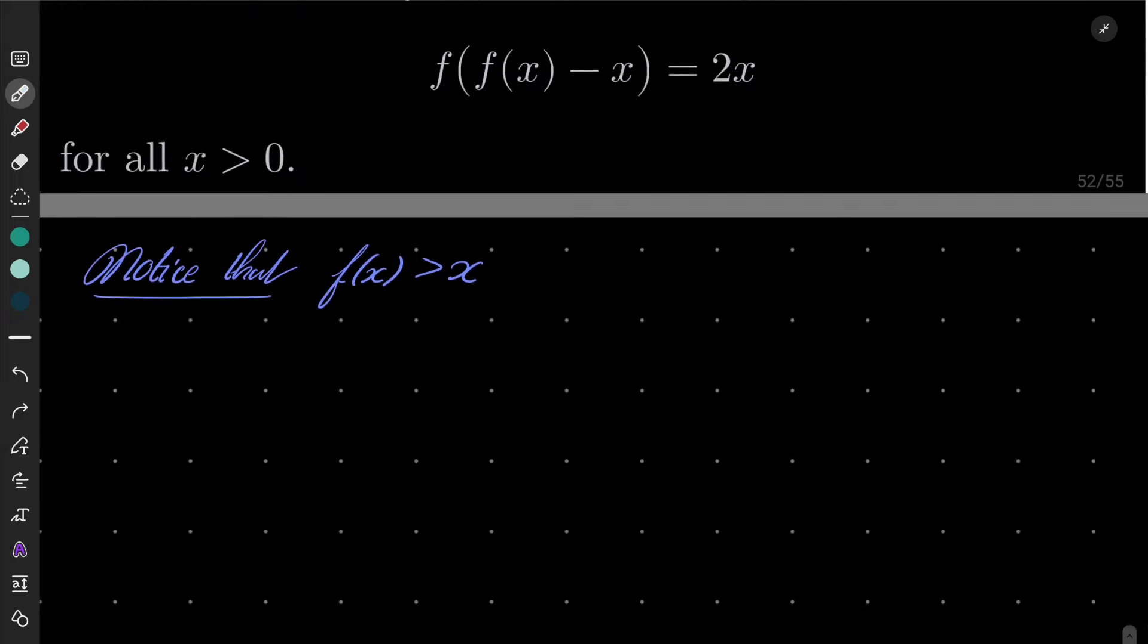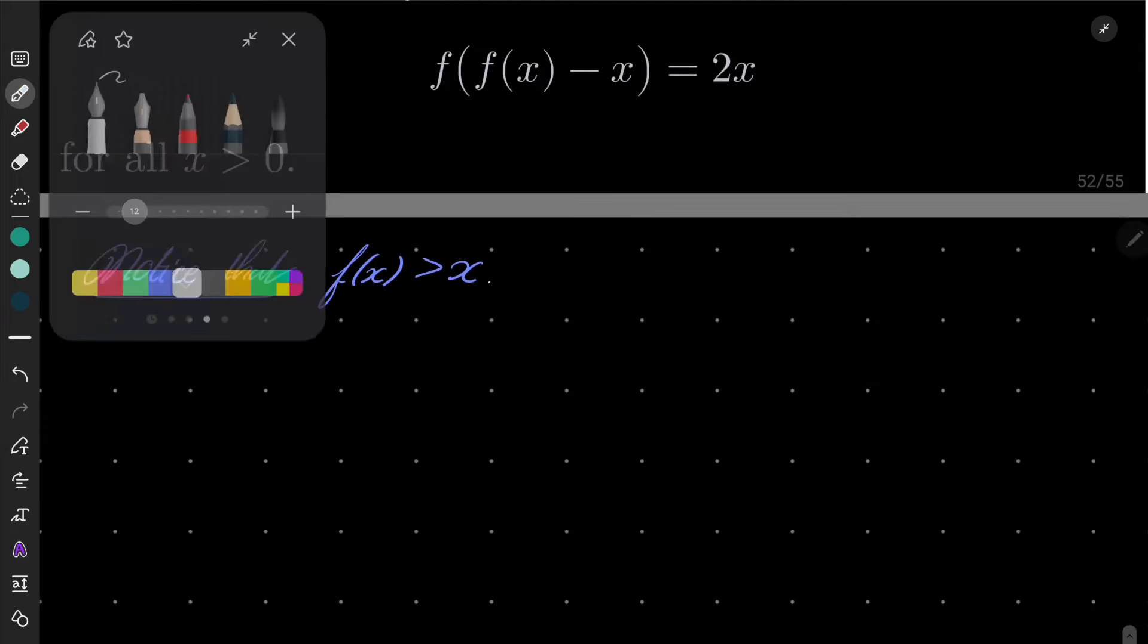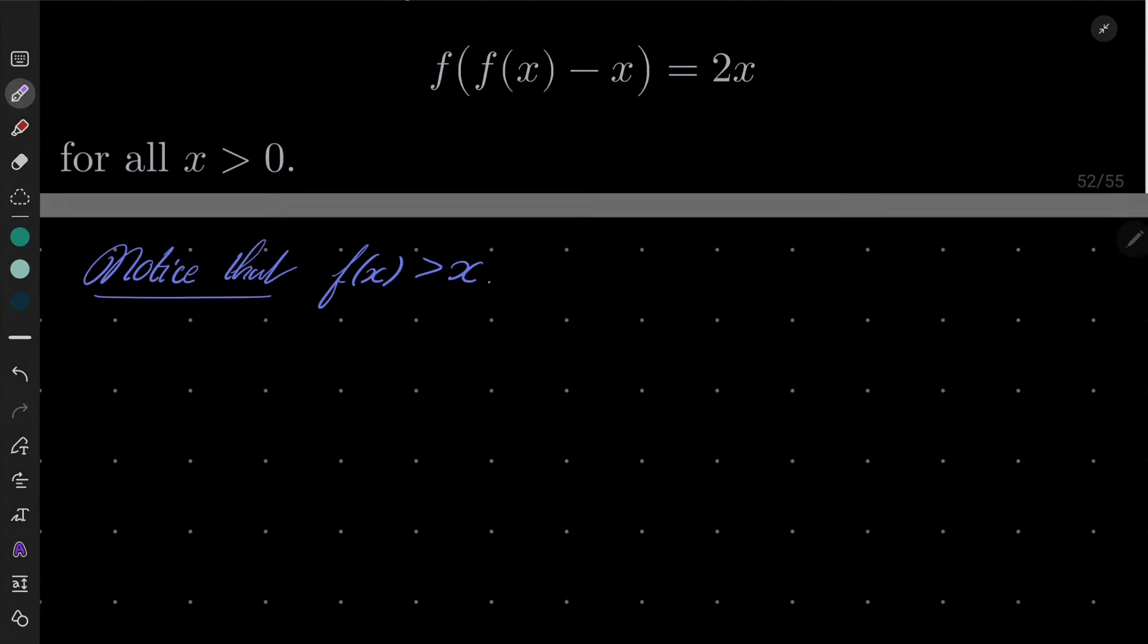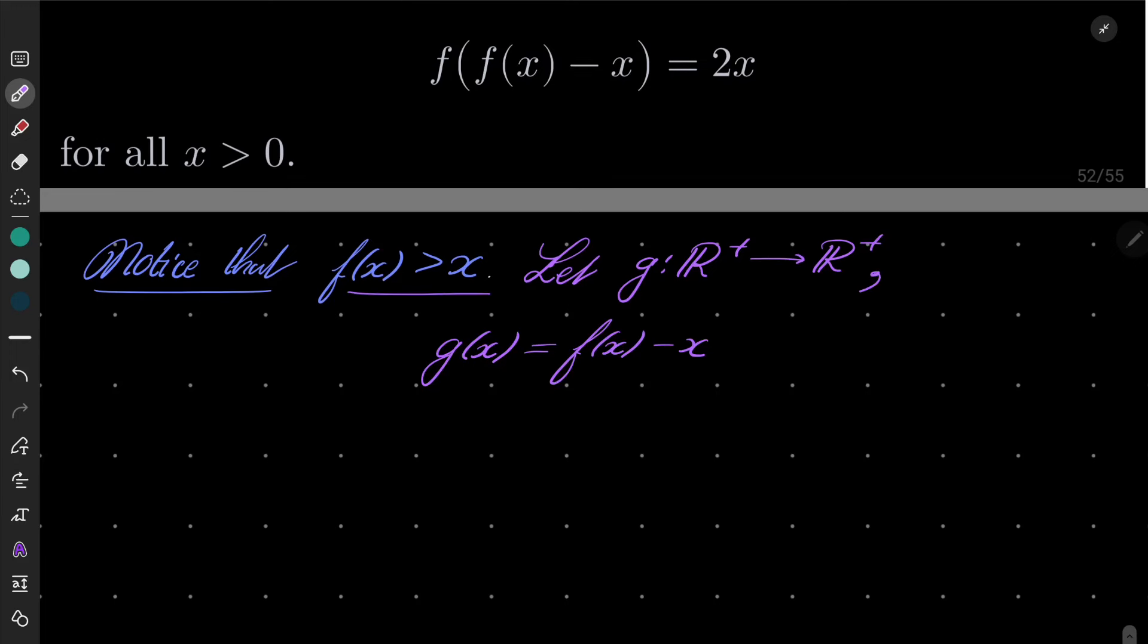Okay, very well. And now let g be a function also going from the set of positive numbers into itself, and let g(x) be equal to f(x) - x. We know that it's well-defined because of this fact.